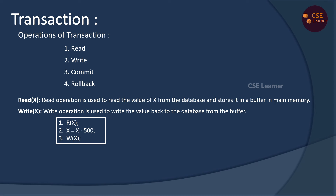Read the value of X. X is set to X minus 500, meaning X becomes 500 rupees. Write of X stores the updated value of X back to the database. X has a value of 2000. Read the value of 2000, then 2500 minus 1500. The resulting value of 1000 is stored back in the database. This demonstrates the read and write operations.